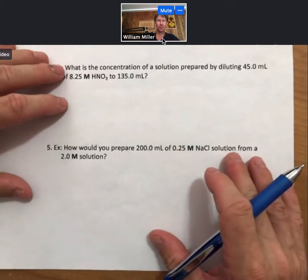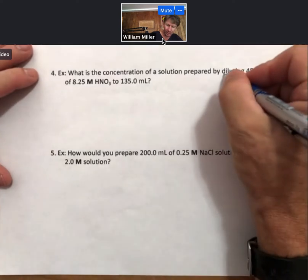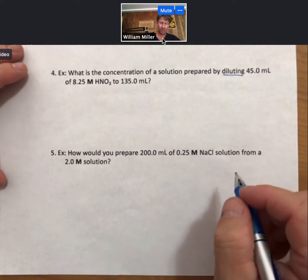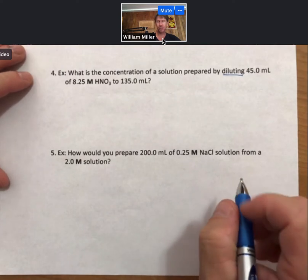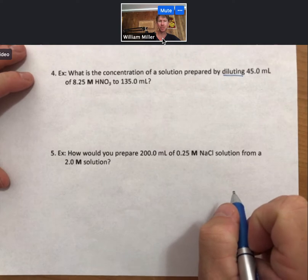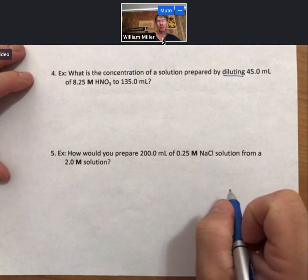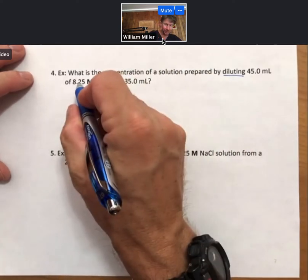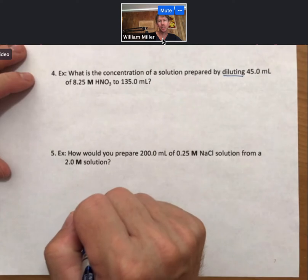Typical problem for dilution. We'll have the word dilution in it, or diluting in this case. What is the concentration of a solution prepared by diluting 45 milliliters of, which means multiply, 8.25 molarity nitric acid, to 135 milliliters. My smaller volume will always be my more concentrated solution.